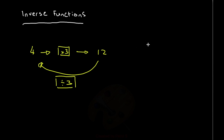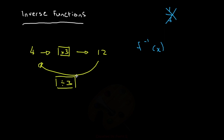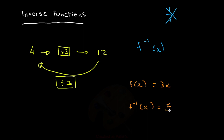In maths, we would show an inverse function as f to the power of minus 1 of x. Some people get confused by the minus 1, thinking back to indices where minus 1 means 1 over f. But it's not that — the minus 1 just means the inverse. So for the example given here, our original non-inverse function would be f(x) = 3x, because we're multiplying the input by 3. To get our inverse function, we need to divide the output by 3. So our inverse function is f⁻¹(x) = x over 3. It takes the input and divides it by 3. And that's how we get our inverse function.